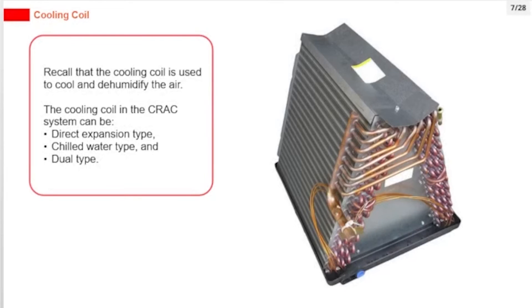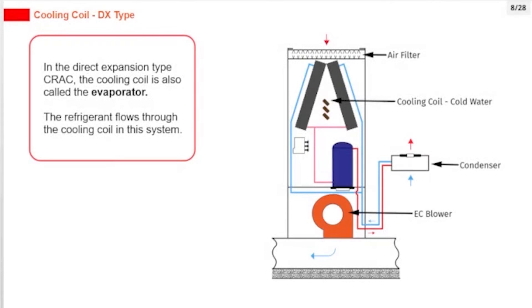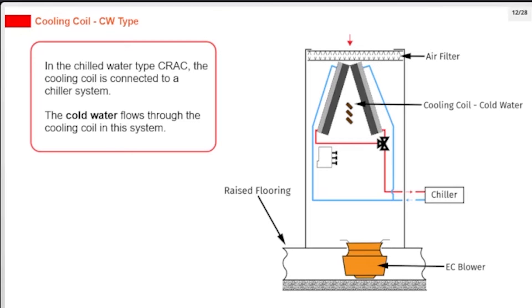The cooling coil is used to cool and dehumidify the air. The cooling coil in the CRAC system can be direct expansion type, chilled water type, or dual type. In the direct expansion type CRAC, the cooling coil is also called the evaporator, and refrigerant flows through it. In the chilled water type CRAC, the cooling coil is connected to a chiller system, and cold water flows through the cooling coil.